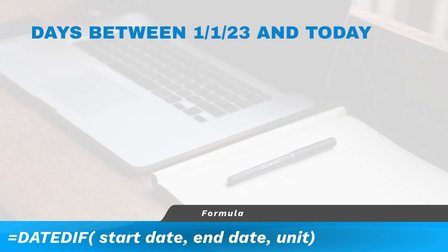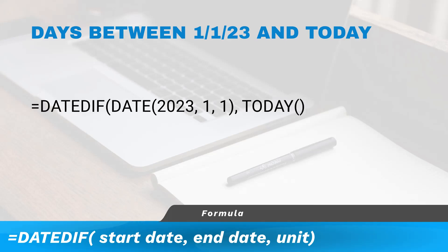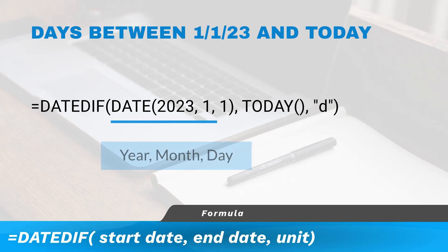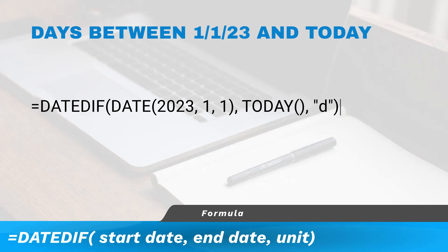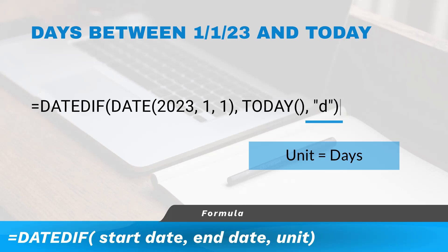For example, to find the number of days between January 1, 2023 and today, type the equal sign, then DATEDIF, open parentheses, DATE(2023, 1, 1), comma, TODAY(), comma, "D", closed parentheses.